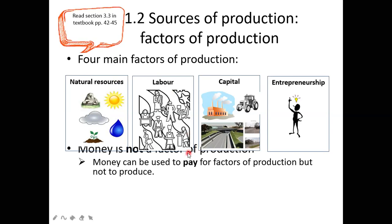The return for land, which is rent, comes in the form of money. The return for capital, which is interest, comes in the form of money. Even entrepreneurship — the return comes in the form of money. So money is not a factor of production, but it is used to pay factors of production.